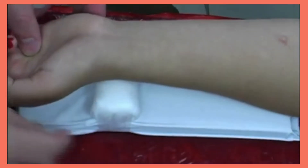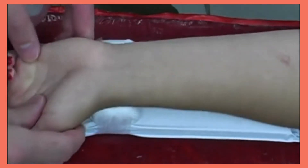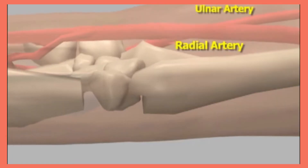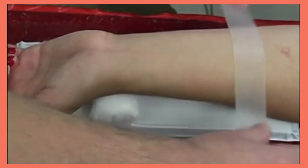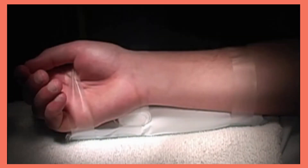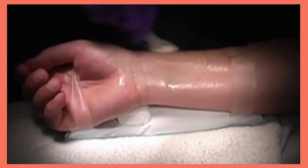Prior to sterile field preparation, position the wrist. By positioning the wrist in dorsiflexion, the radial artery is brought into closer approximation to the skin, which can be instrumental to the success of the procedure. Proper positioning can be maintained by placing a roll of gauze under the wrist or by using a specially designed arm board and securing the arm with tape.